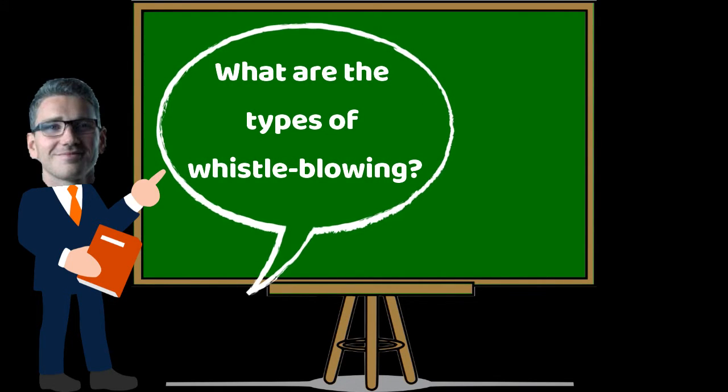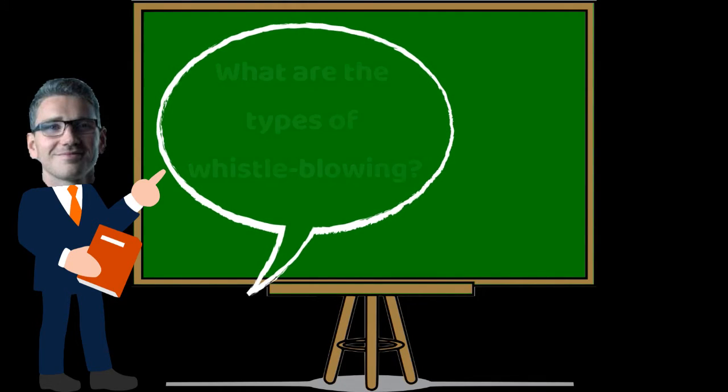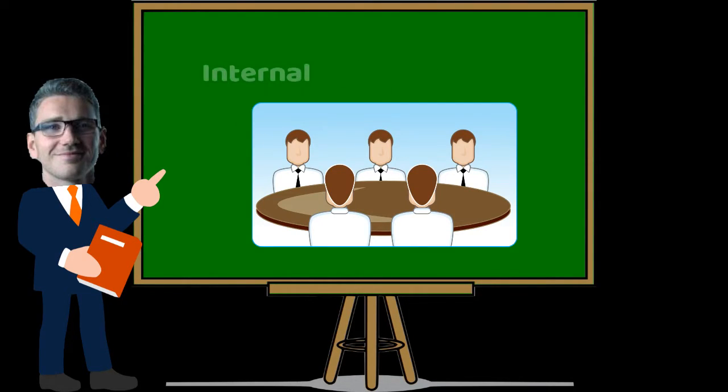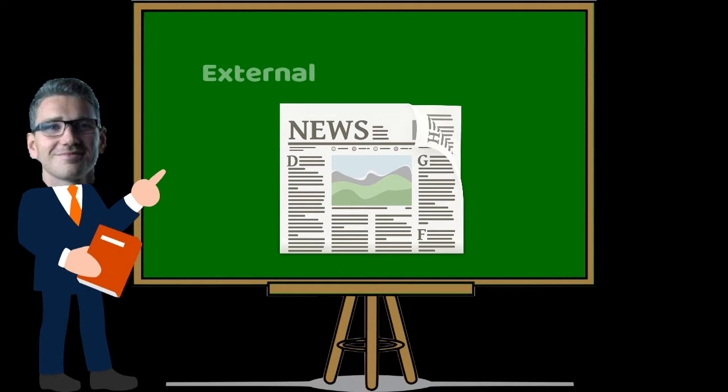What are the different types of whistleblowing? There are two: internal and external. Internal is disclosure to your internal colleagues, such as your manager. External whistleblowing involves the media or some other public avenue.